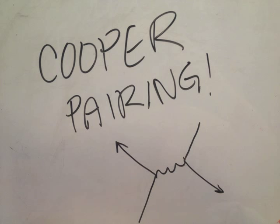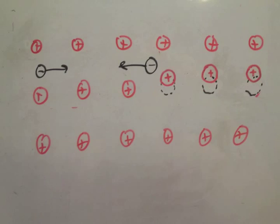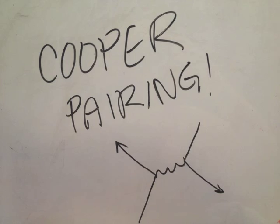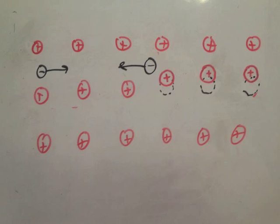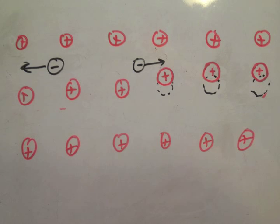Here's a short explanation on how Cooper pairing works. A passing electron attracts the lattice, causing a slight ripple towards its path. Another electron passing in the opposite direction is attracted to that displacement.